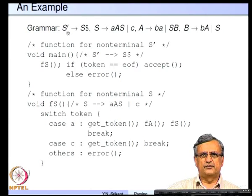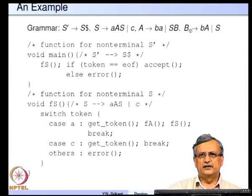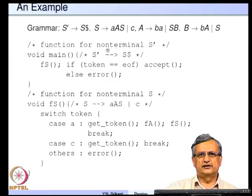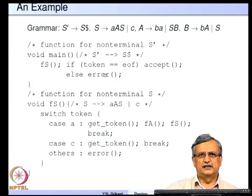For an example with grammar S prime going to S dollar, S going to A A S or C, A going to B A or S B, B going to B A or S — there is one function for each non-terminal: a function for S prime, one for S, one for A, and one for B.